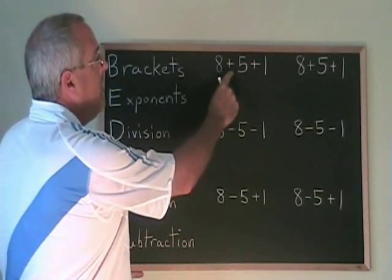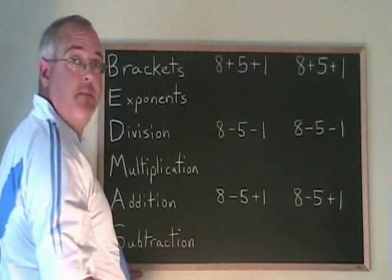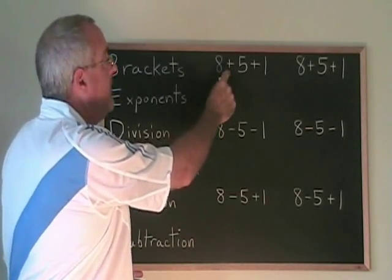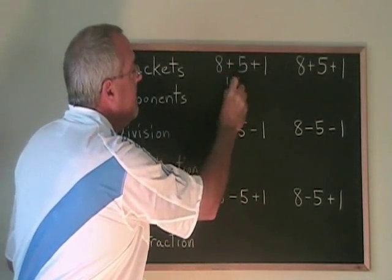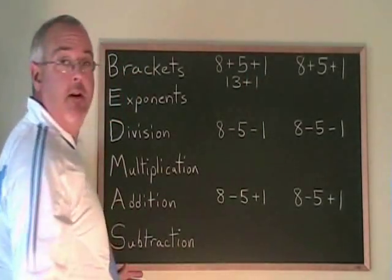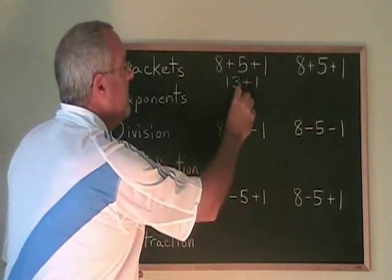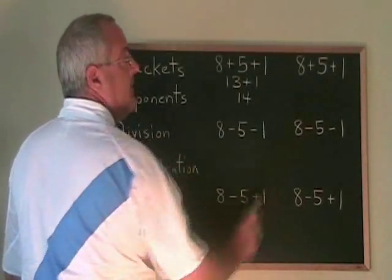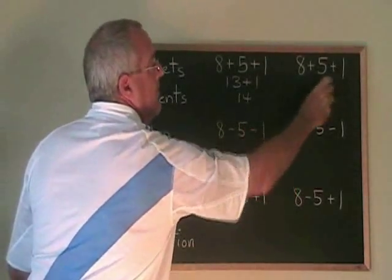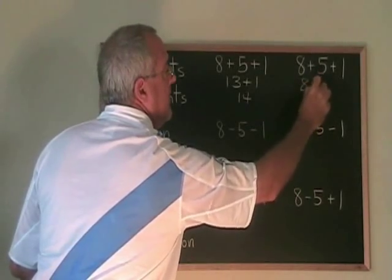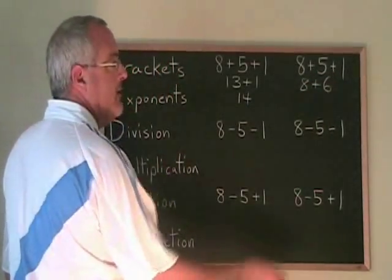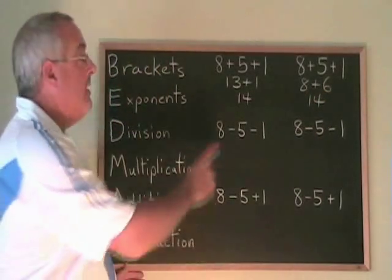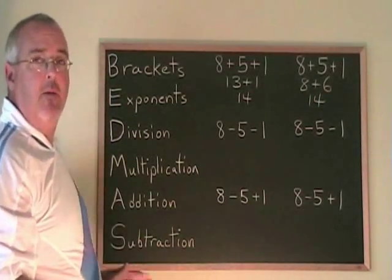Here we have two pluses. Let's try doing this problem doing the first plus first: 8 plus 5 is 13, so we have 13 plus 1, and the answer is 14. If we do the second plus first, we have 5 plus 1, which is 6, and we write 8 plus 6 — the answer is again 14. So when you have more than one plus sign, it doesn't really matter which order you do them in.